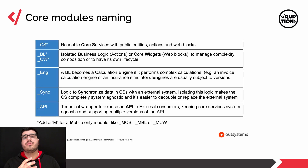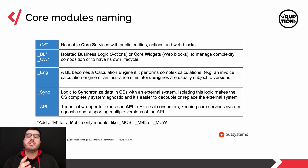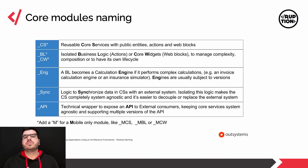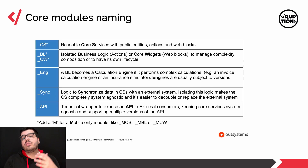For naming conventions, we have several different names even within the sub-layers. Our reusable core services are going to use the suffix _CS, or _MCS for mobile. This covers our public entities, actions, and web blocks. Then we'll have the _BL or _CW suffix — _BL is for isolated business logic such as actions, and _CW is for core widgets, which are the web blocks we talked about earlier, used to manage complexity, composition, or to have their own life cycle.